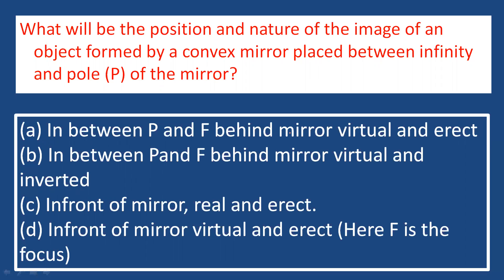The image in a convex mirror is always formed behind the mirror, between P and F. The convex mirror always forms a virtual, erect, and diminished image. A virtual image will never be inverted. So the correct answer is option A — virtual and erect.